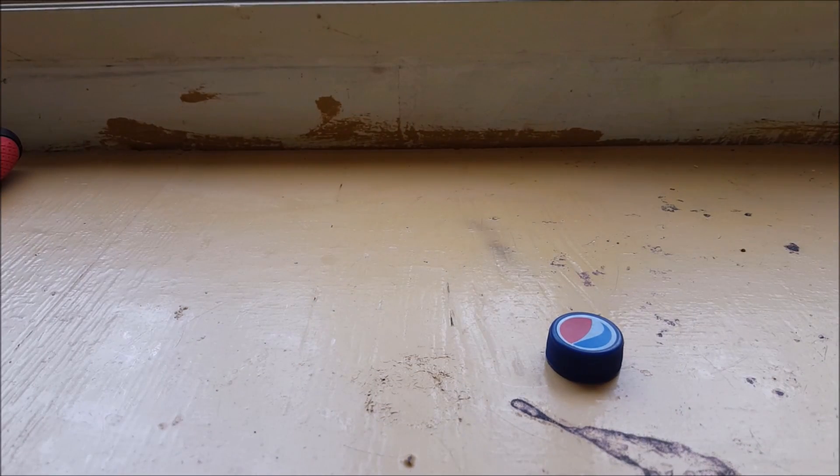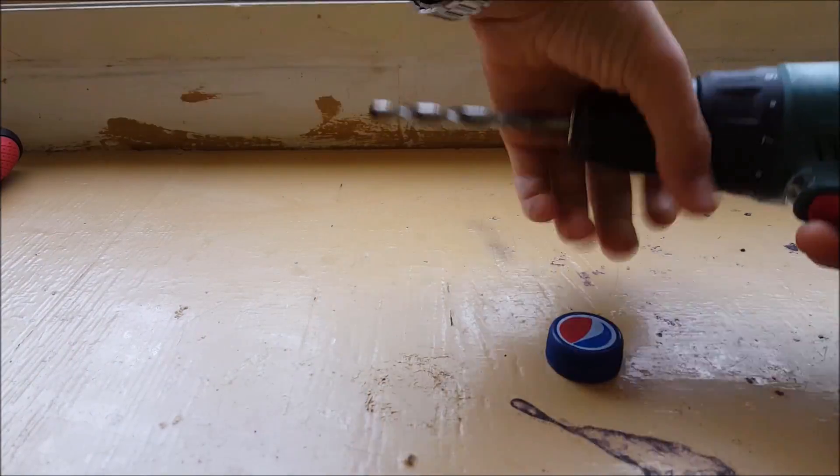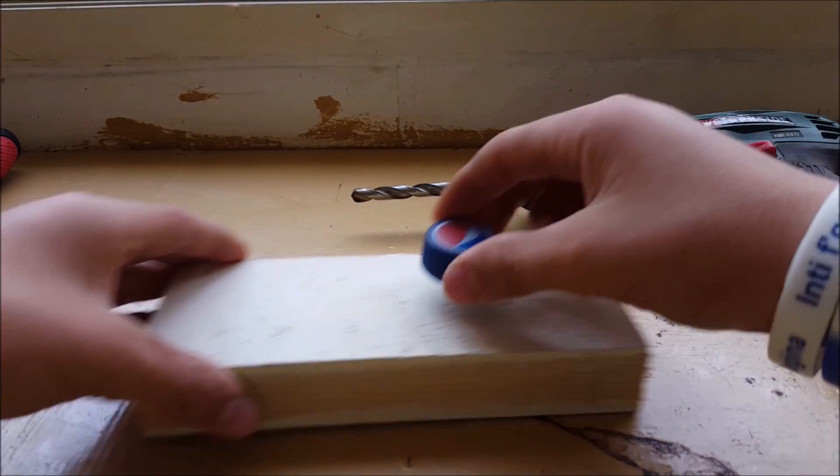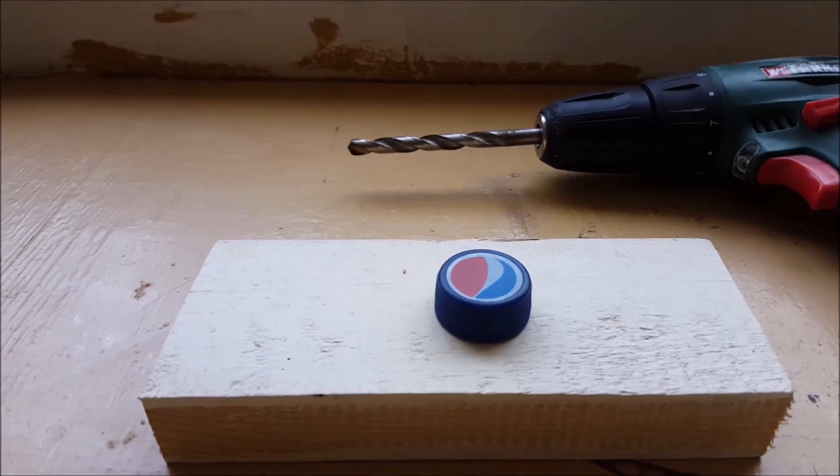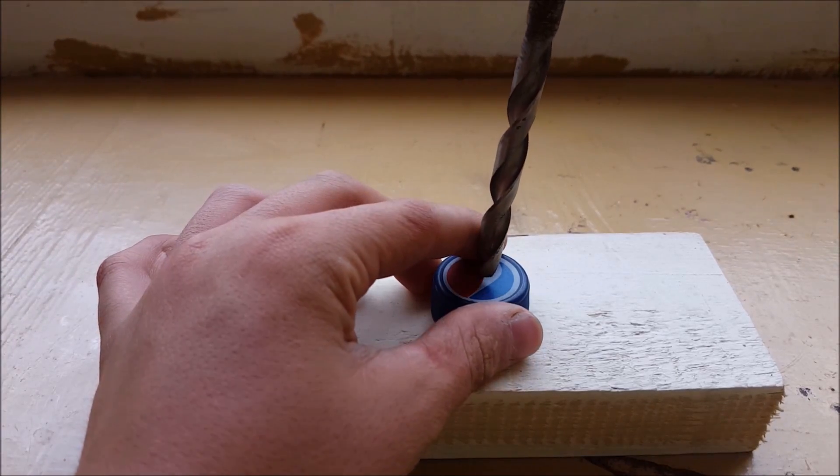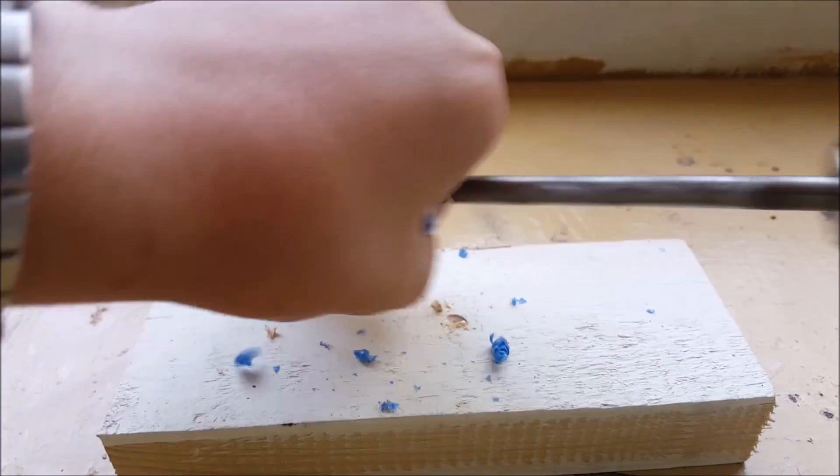After that, grab the 8 mm bit and lock it into your drill. And then drill a hole and try to precisely drill it in the middle so that the epoxy is in place well. Also I'm using a piece of wood so that I don't drill the bench top.